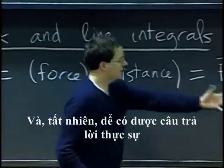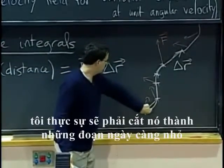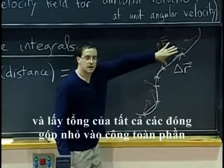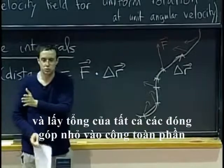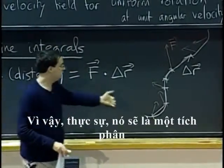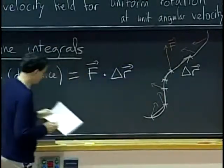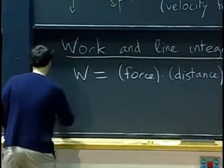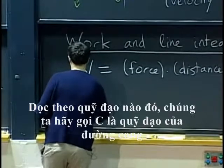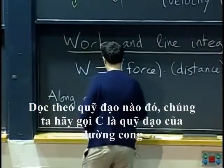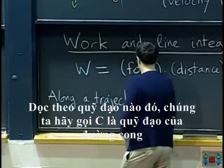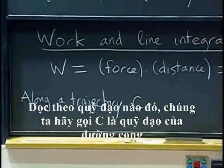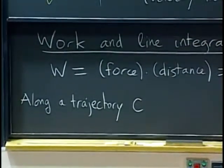And, of course, the actual answer, well, to get the actual answer, I should actually cut into smaller and smaller pieces and sum all of the small contributions to work. So, in fact, it's going to be an integral. So, along some trajectory, let's call C the trajectory for curve. You know, it's some curve.